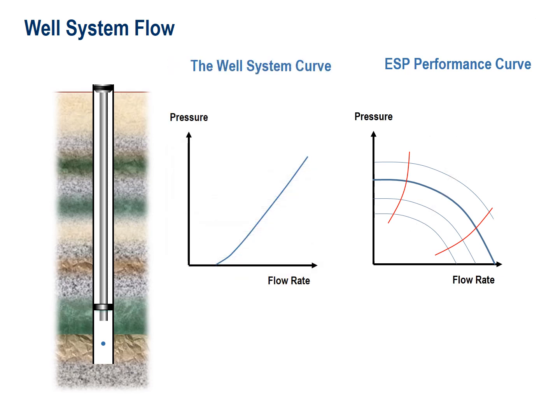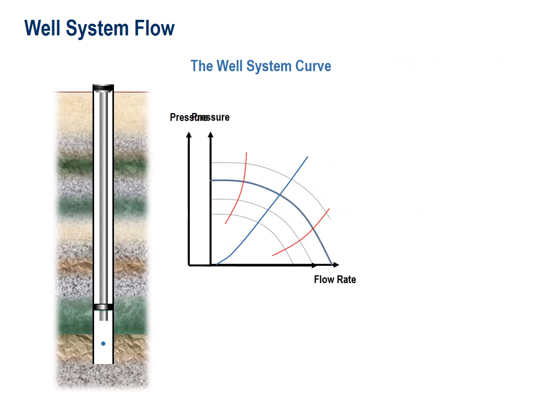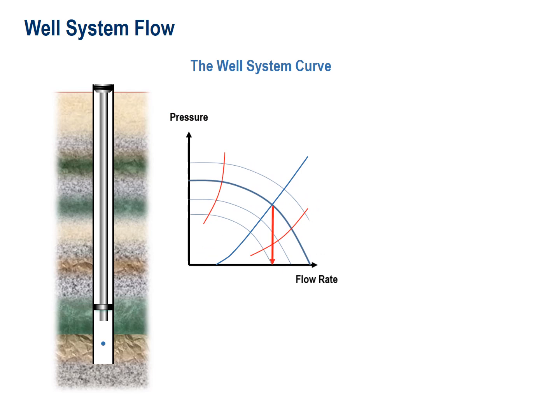So now we have the amount of artificial lift our well needs as a function of flow rate, and the amount of artificial lift our pump can provide as a function of flow rate. We can cross-plot this to find the flow rate that our total system can deliver — and here we see the so-called operating point, and again the green arrow.